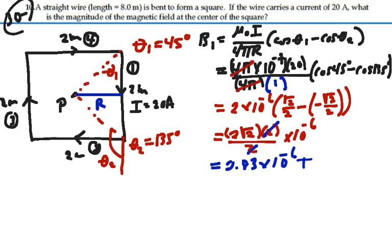So we have 2.83 times 10 to the minus 6 Tesla from one segment. And if we were to use the right hand rule, this magnetic field would be going into the page as we're looking at it.